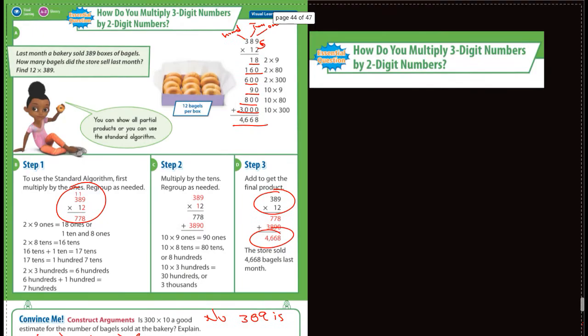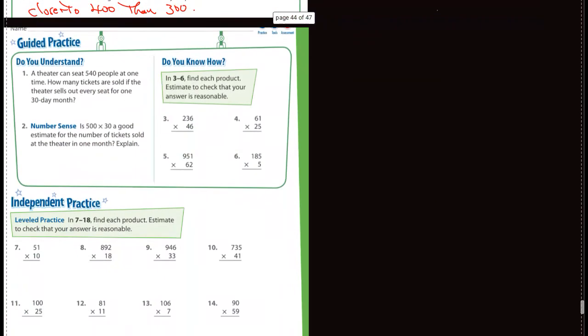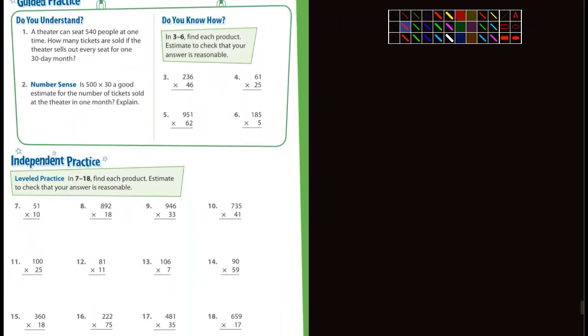Okay, so the guided practice, the next page. A theater can seat 540 people at one time. How many tickets are sold if the theater sells out every seat for one 30-day month? All right, well let's do this two ways here.